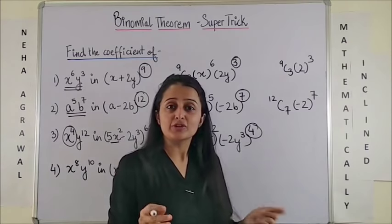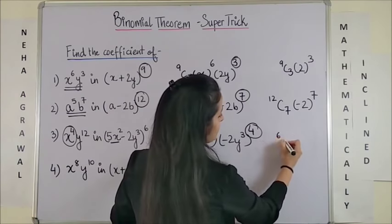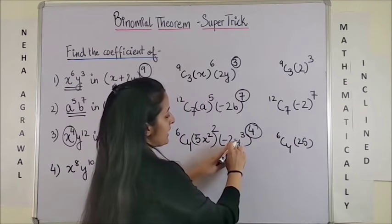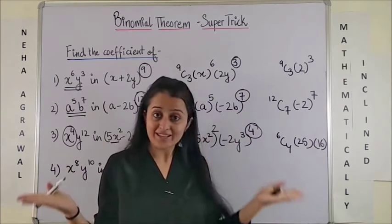Now, what is the coefficient of x raised to power 4, y raised to power 12? It is simply whatever are the constant terms. 6c4 into 5 squared, that's 25, into minus 2 raised to power 4 which would be 16. That's all.